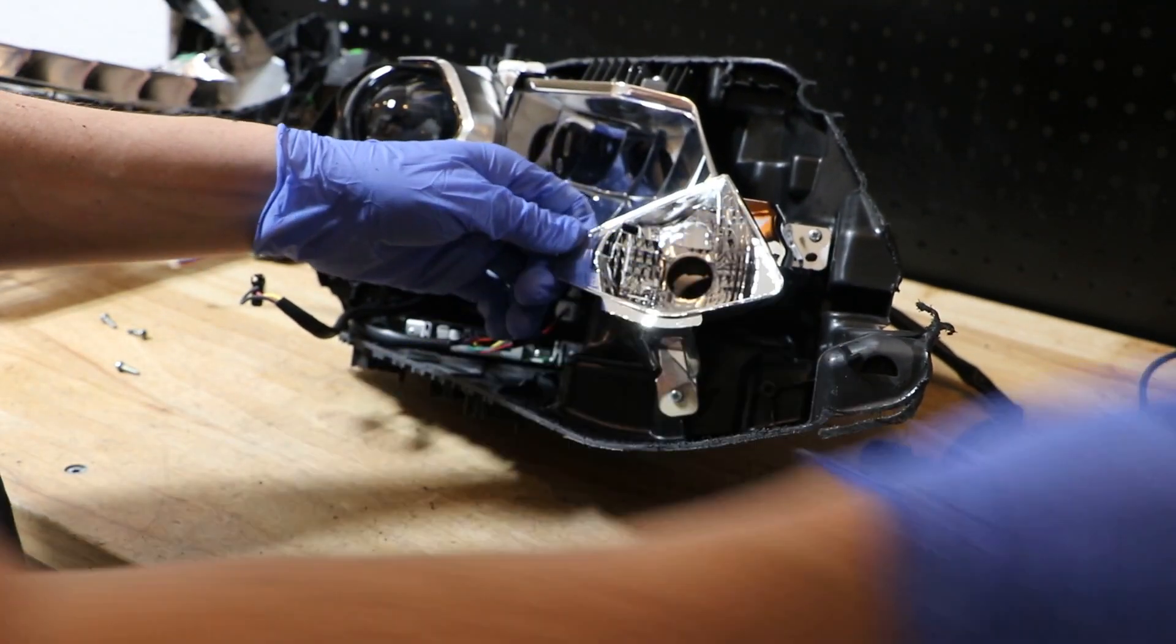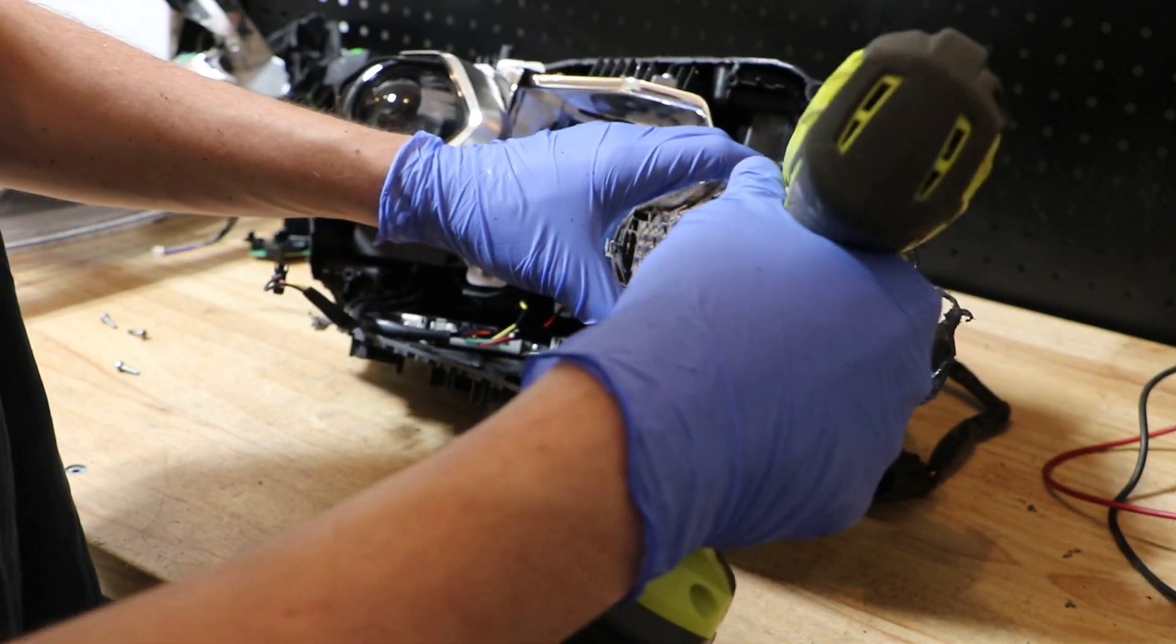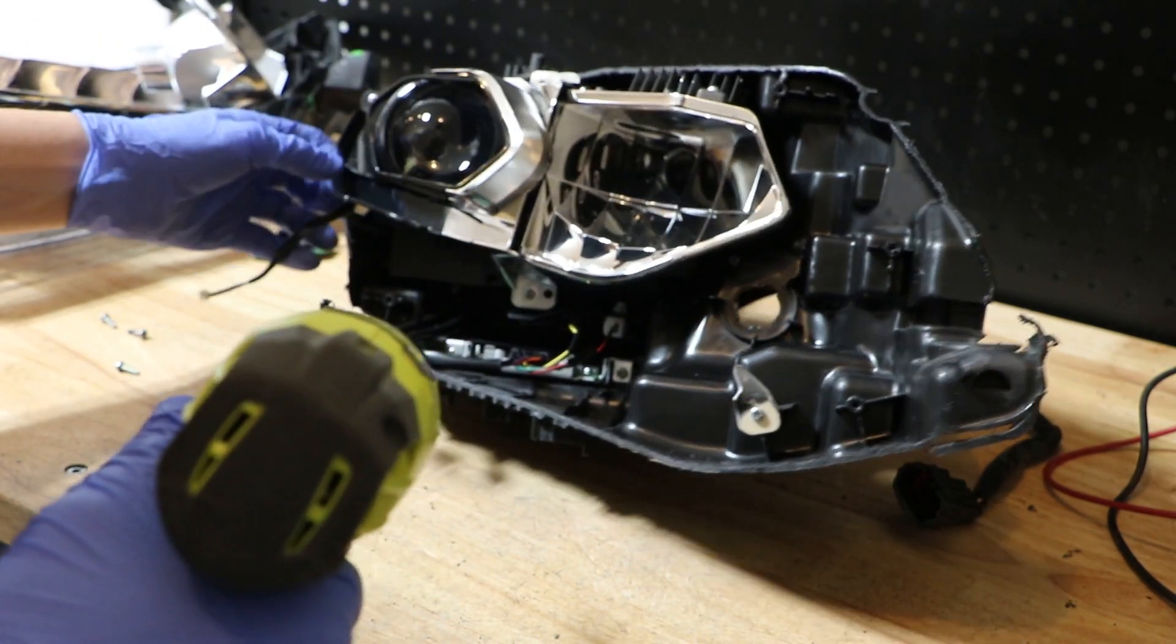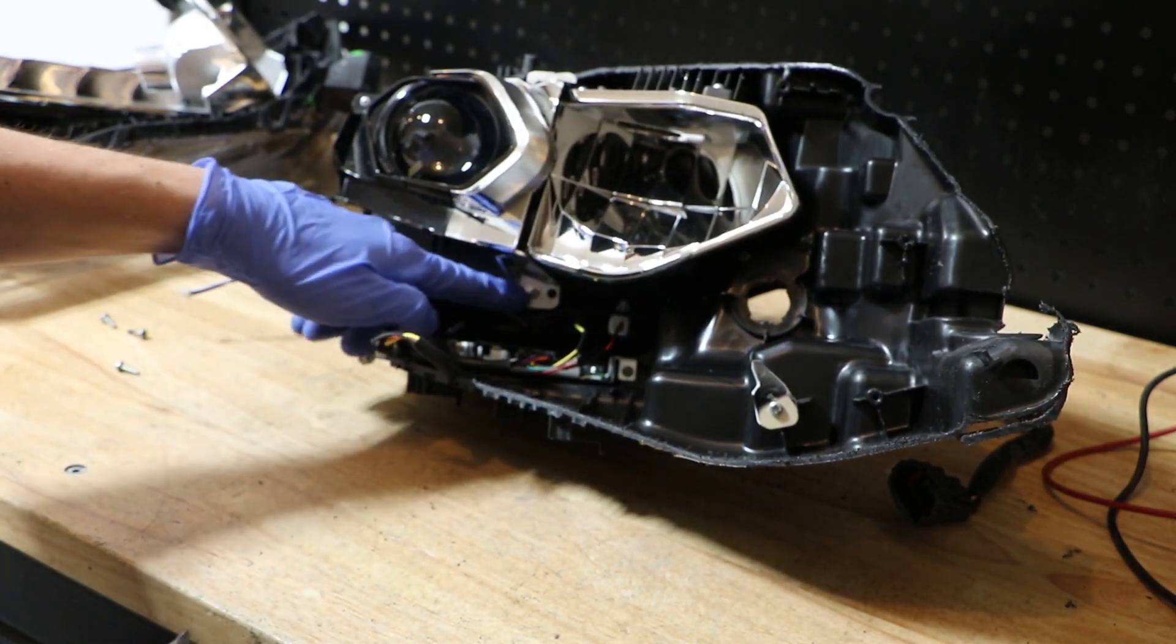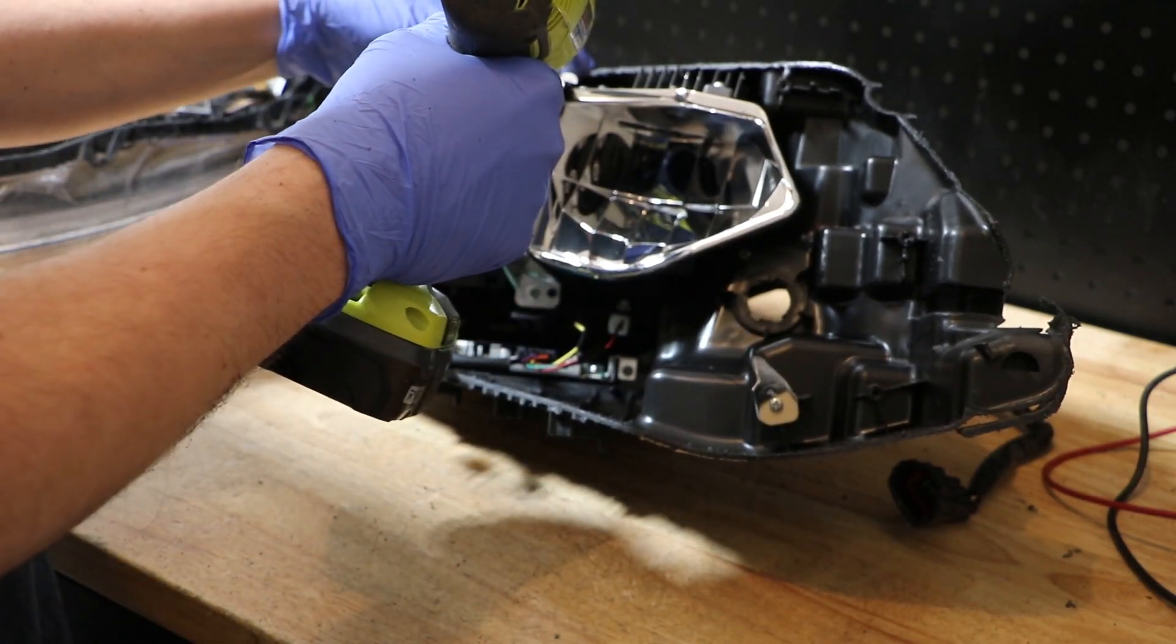Next I'm going to remove the turn signal housing. And next we're going to start removing the screws holding on the high and low beam shroud.